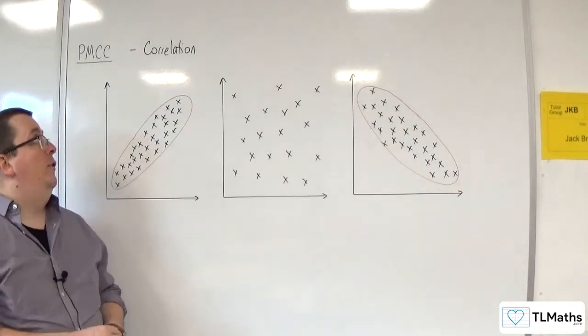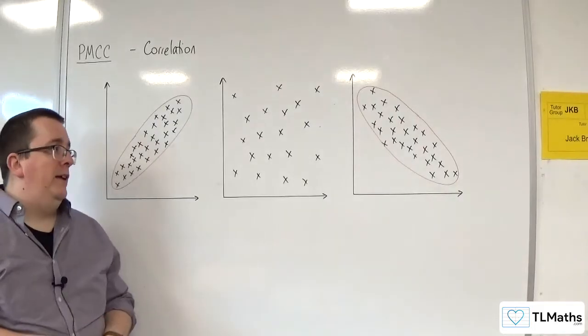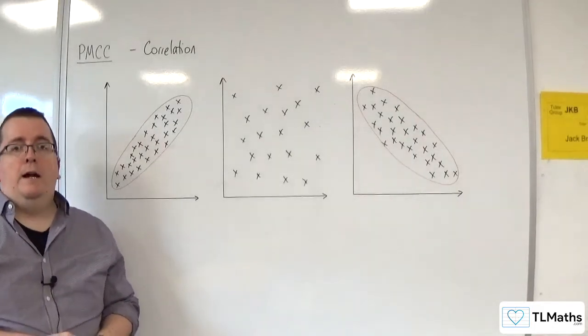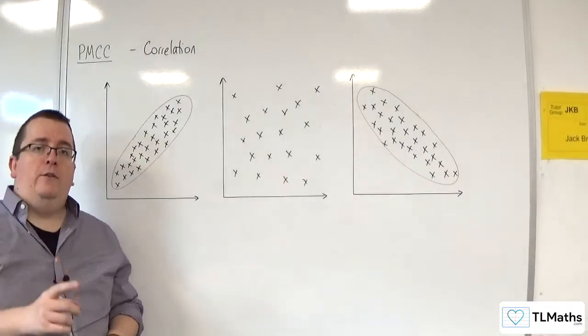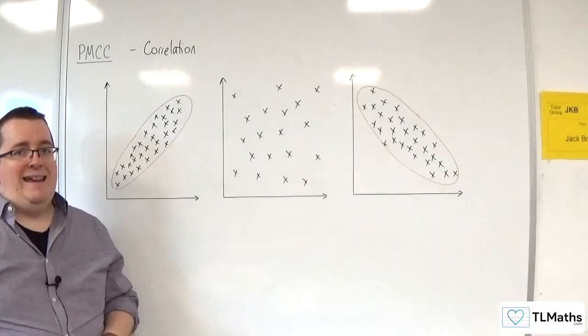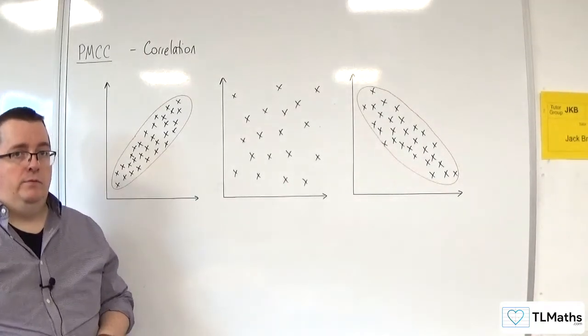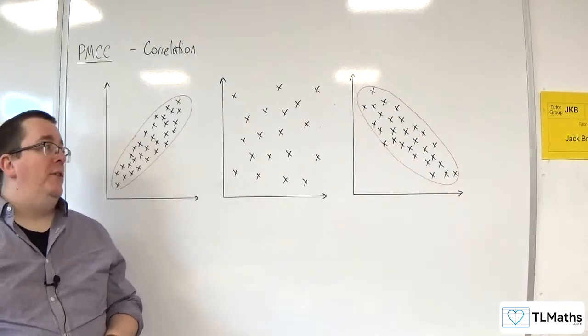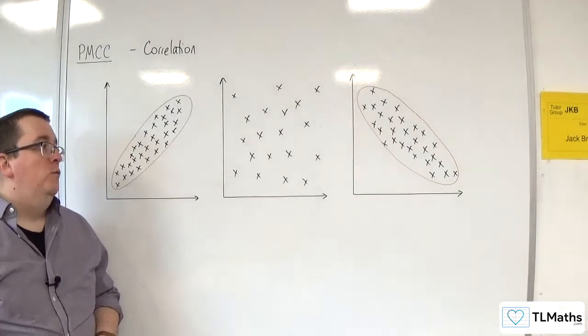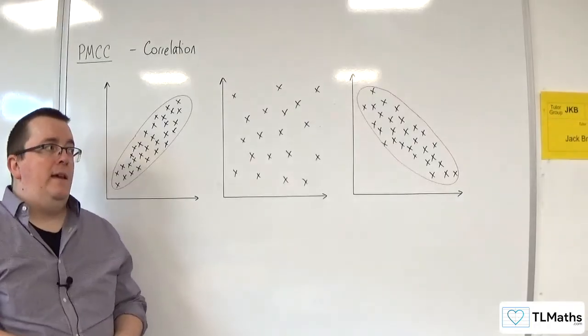So when we get on to the hypothesis test for the product moment correlation coefficient, then you are on the lookout for whether the data is roughly elliptical. That identifies a bivariate normal distribution, which is what you need for the test to be valid.